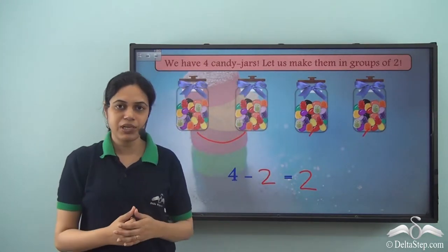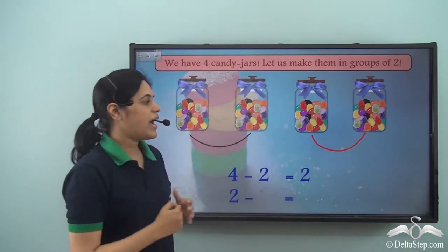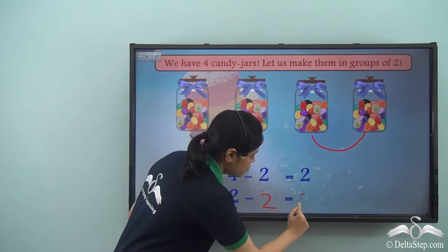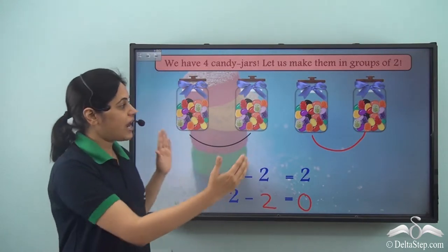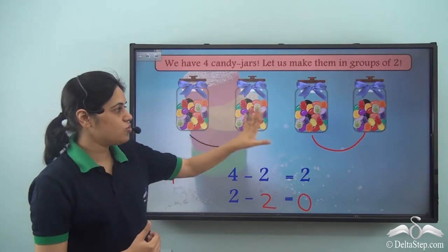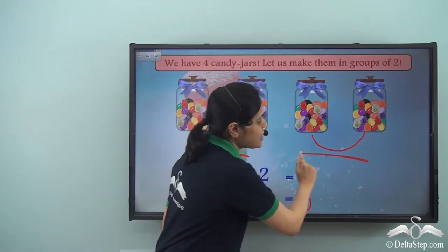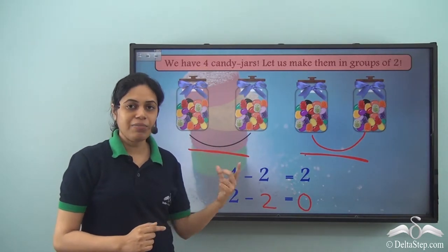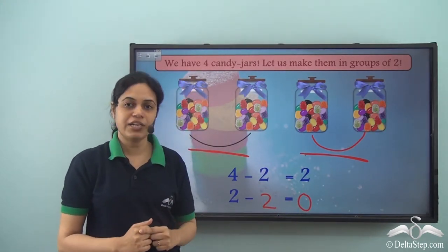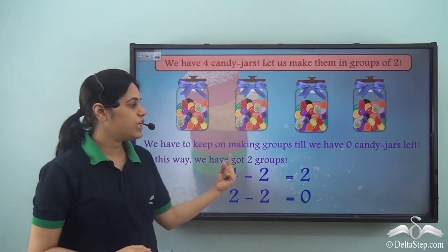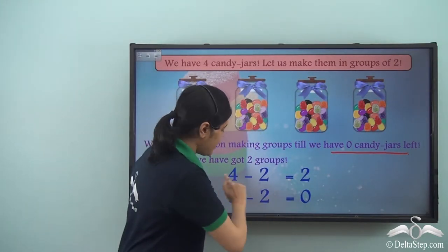So I have these two candy jars left. Now I can make another group. I take these two and make another group. Two minus two gives me zero and there are no more candy jars left. So when I have four candy jars, I can take these two and these two and form two groups — this is the first group and this is the second group. Taking two candy jars at a time, I form groups until I have zero candy jars left. In this way we get two groups.